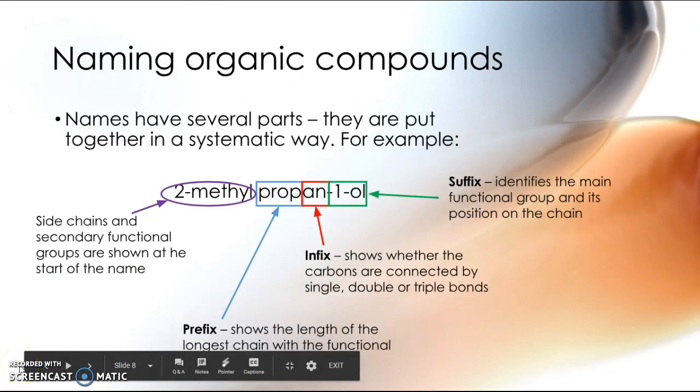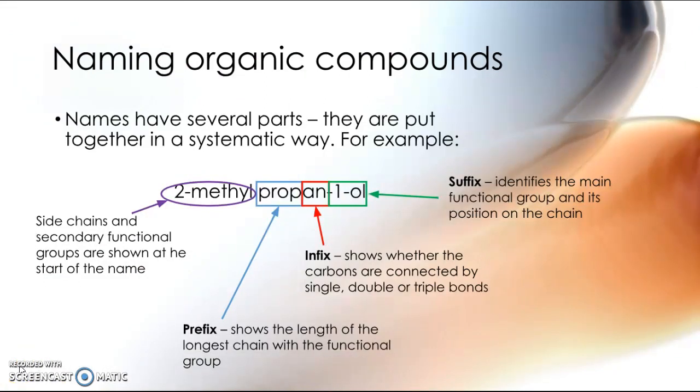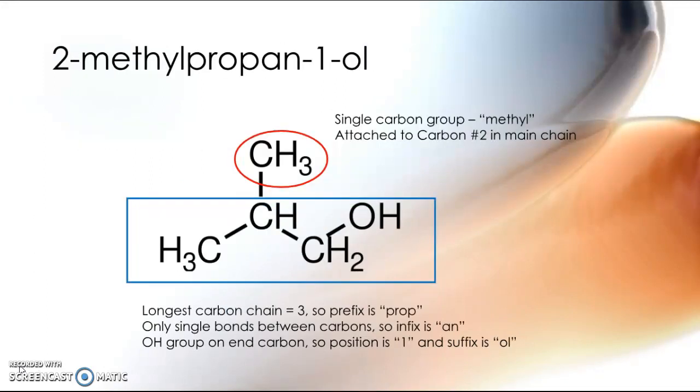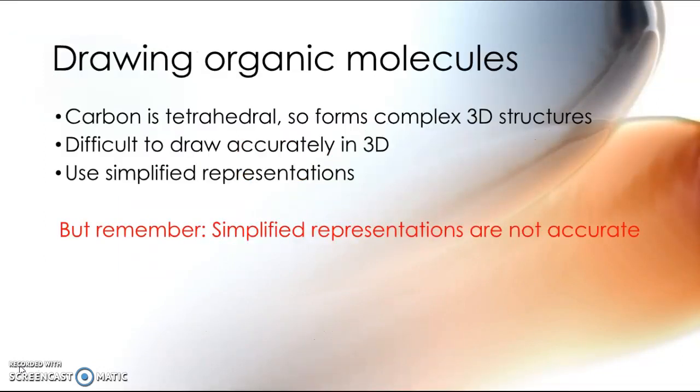All organic compounds are named in this way, using the systematic approach. There are some key things you need to know, however. This is another way that you can draw the same molecule. Key things to remember: Carbon is tetrahedral, which means that it is not a linear shape. It forms 3D structures, 109.5 degree bond angles. I can't draw that neatly, and I don't expect you to draw that neatly.